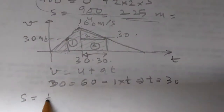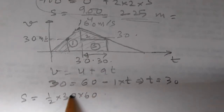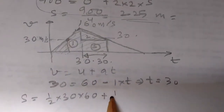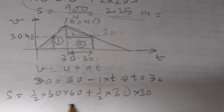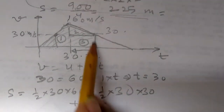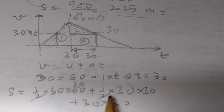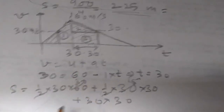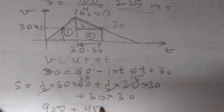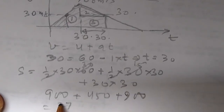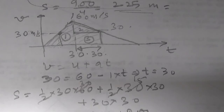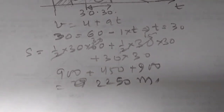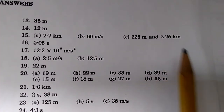The total area: the first triangular area is half times 30 times 60 equals 900 meters. The second region breaks into a rectangle and a triangle: the rectangle is 30 times 30 equals 900, and the triangle is half times 30 times 30 equals 450. Total second position distance equals 900 plus 900 plus 450 equals 2250 meters, or 2.25 kilometers. The answer checks out.